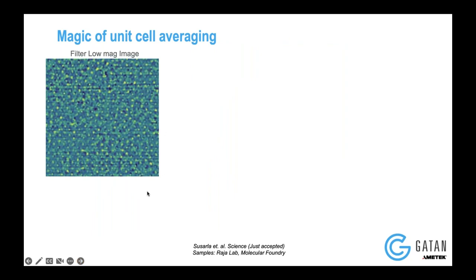The problem was that, okay, we have the spectra — this is the average spectra with the K3 detector — but it was still very difficult to detect what's happening at the atomic scale, because we acquired these scans very fast so we did not damage the material. So how do you solve the problem of creating these EELS maps? What we tried to do was unit cell averaging, and this is credit to Peter Ercius at Berkeley, where he developed algorithms for that.